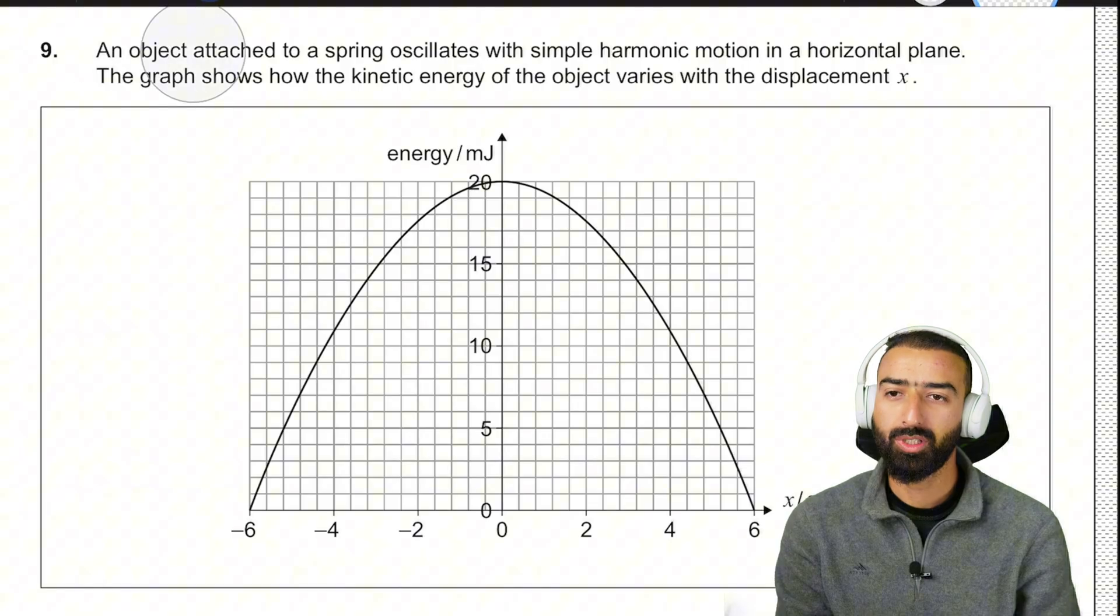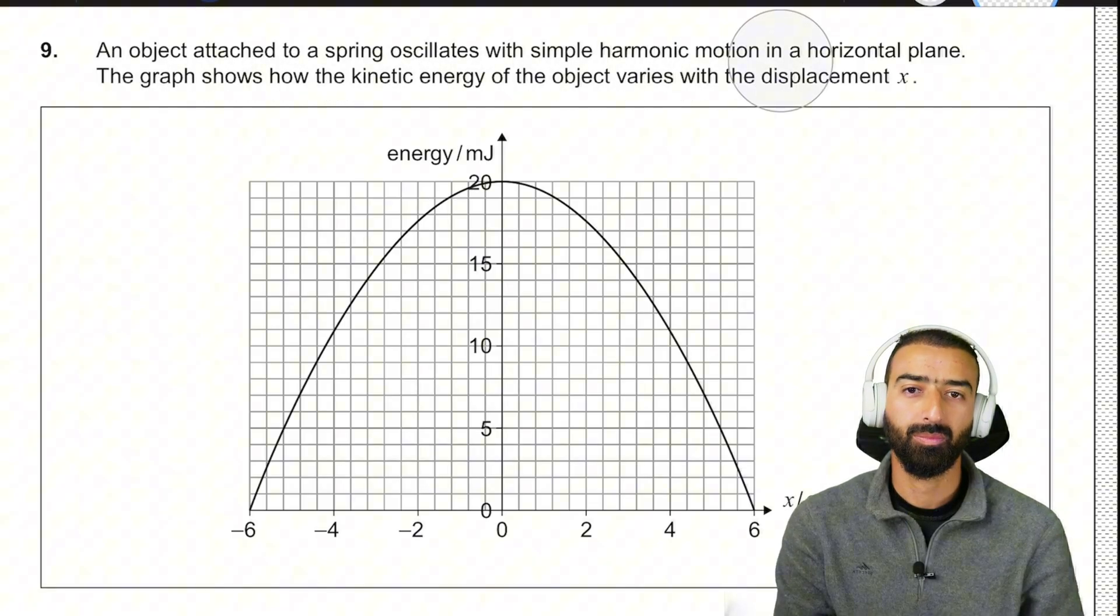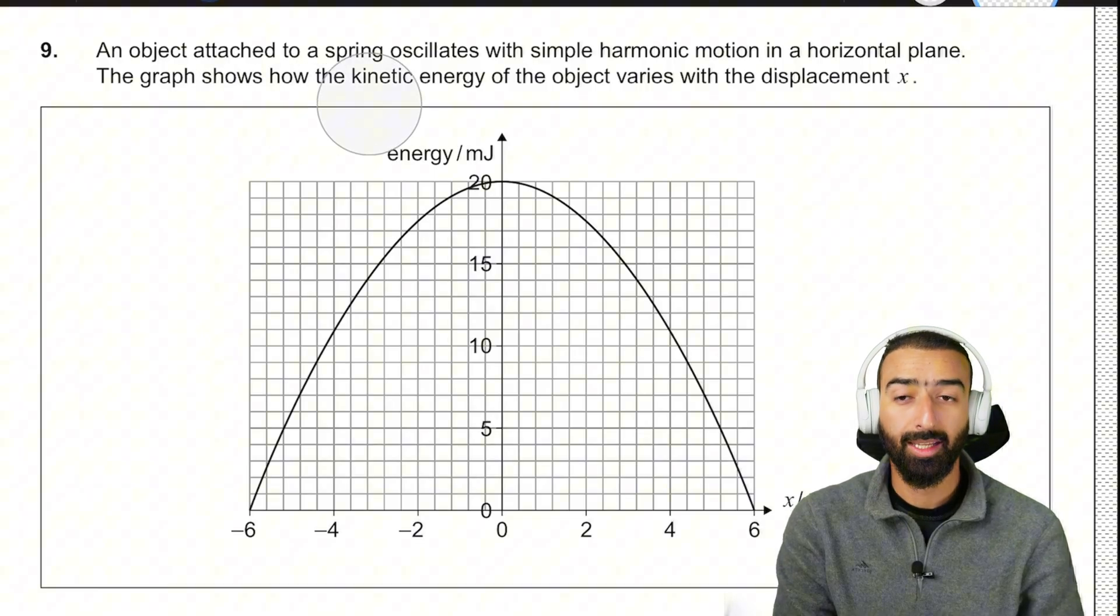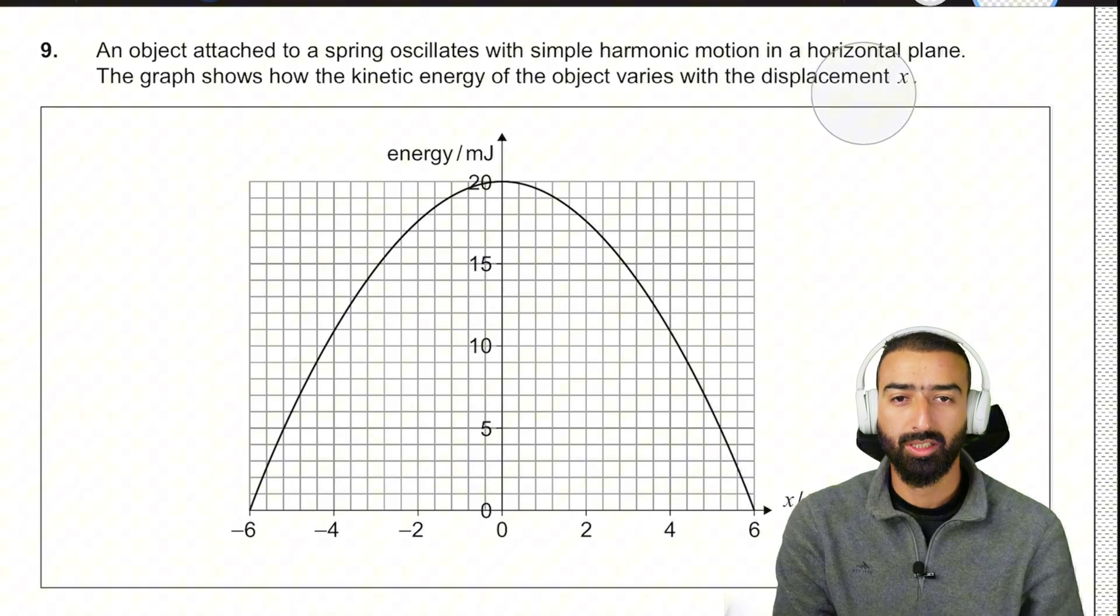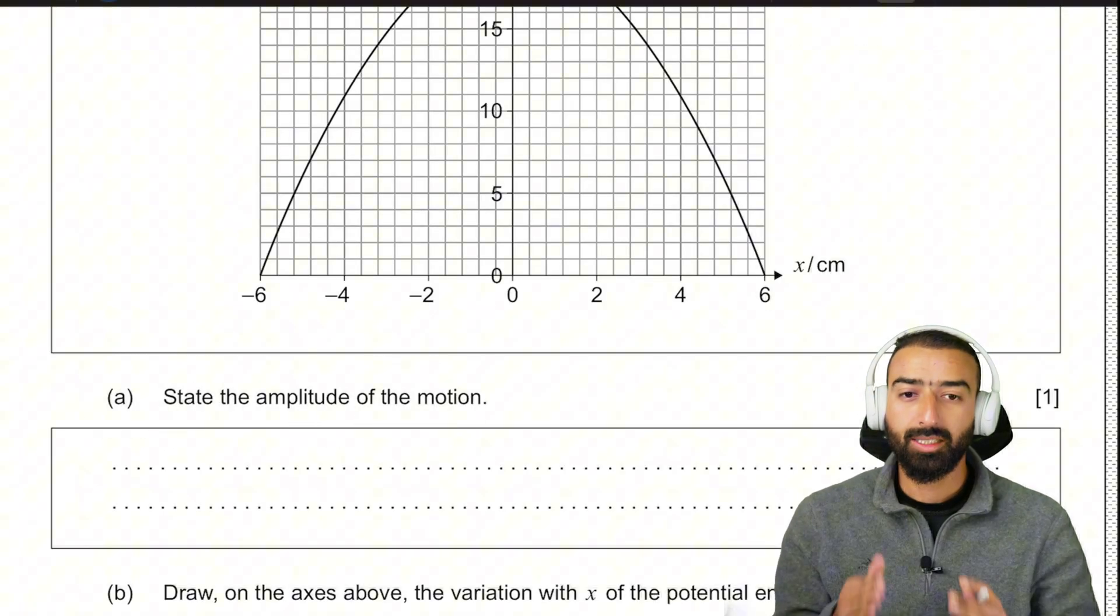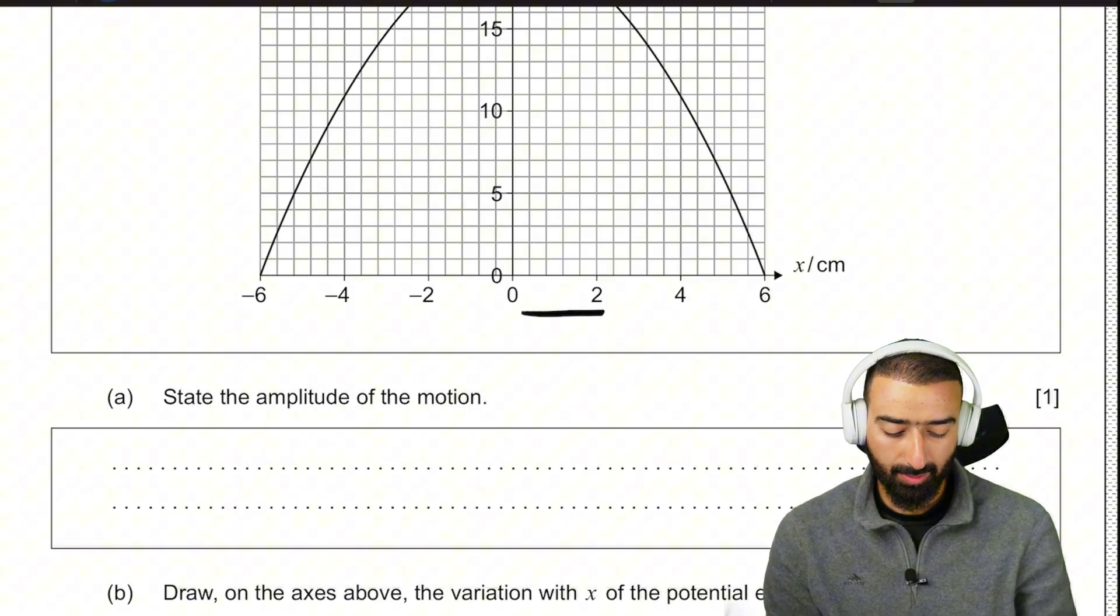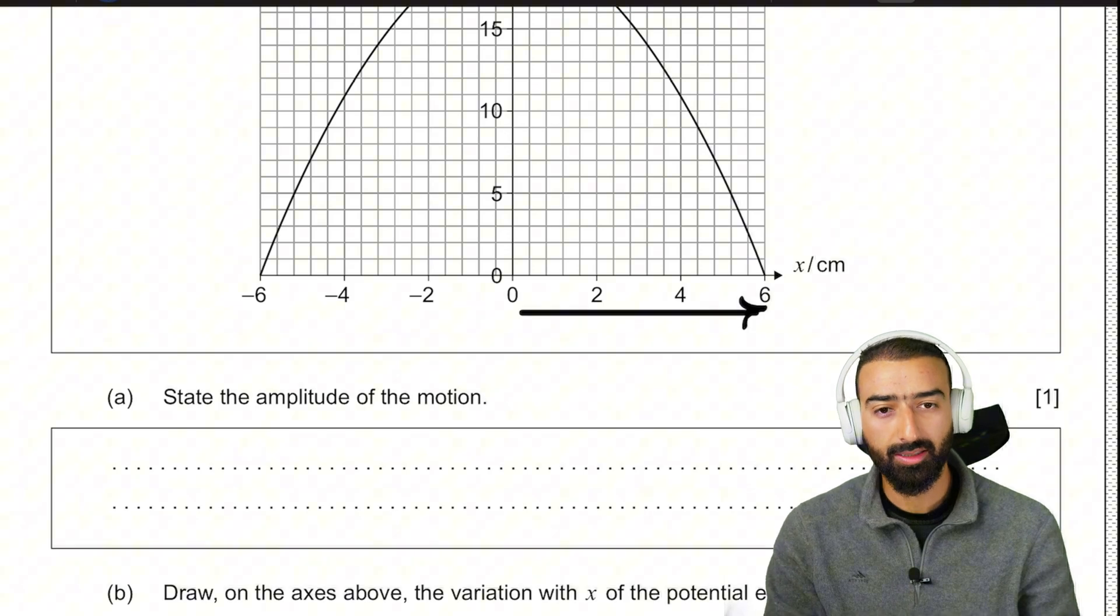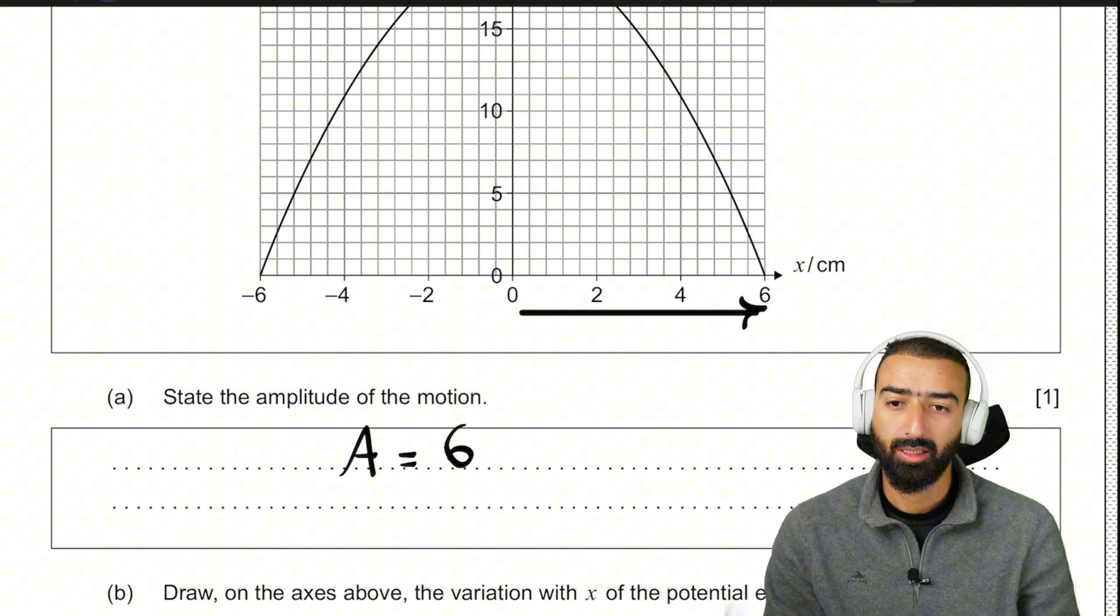An object attached to a spring oscillates with simple harmonic motion in a horizontal plane. The graph shows how the kinetic energy of the object varies with the displacement. State the amplitude of motion. An amplitude is the maximum displacement from the mean position. Maximum displacement can easily be read off from the graph. It's 6 centimeters. So amplitude is 6 centimeters.